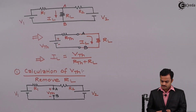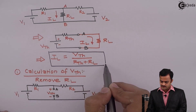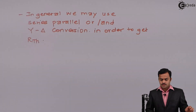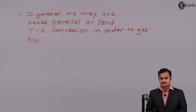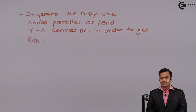Once you have Rth and Vth, use the formula IL = Vth / (Rth + RL) to get the current flowing through the load resistance. The trick in Thevenin's theorem is: first get Vth, second get Rth, then connect them in series to form the Thevenin's equivalent circuit, connect the load resistance, and using simple Ohm's law you get the current through the load. In subsequent videos we will see application of Thevenin's theorem while solving problems. Thank you.